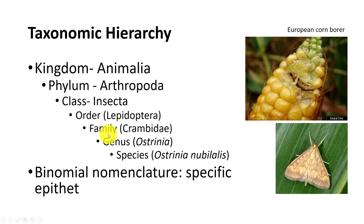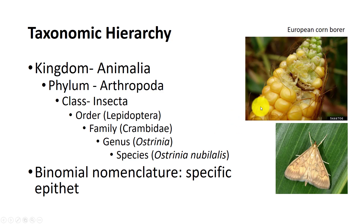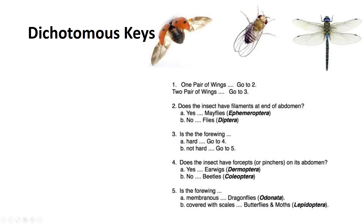Many times, family ID is sufficient for management. For genus or species level ID, you need special taxonomic keys or expert assistance. Species may also be easier to identify when it is associated with a plant, like the pests of tomatoes or corn in this case.